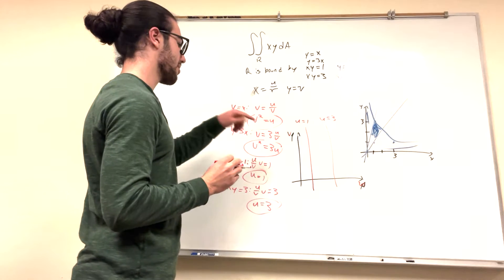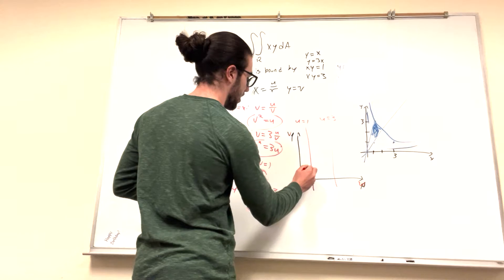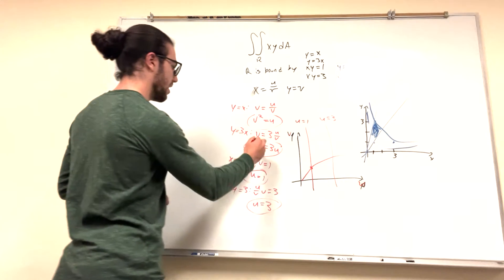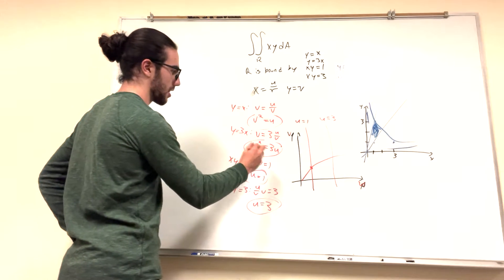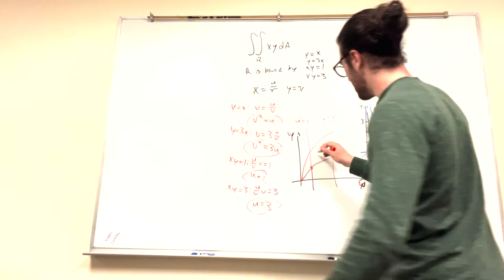So now we have v squared equals u. How are we going to write that? Well, obviously, it just kind of goes here. This is like 1, 1. It looks around like that. And then v squared equals 3u. It's going to look like this. And now we're looking at this, and we have this region here.